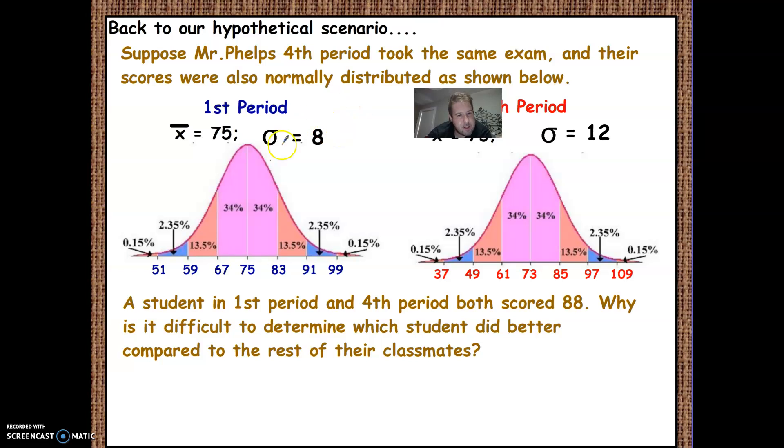Okay, so back to our hypothesis. So Mr. Fell's fourth period took the same exam, and their scores are normally distributed. So here's first period and fourth period. Now, a student in first period and fourth period both scored in 88. So why is it difficult to determine which student did better?